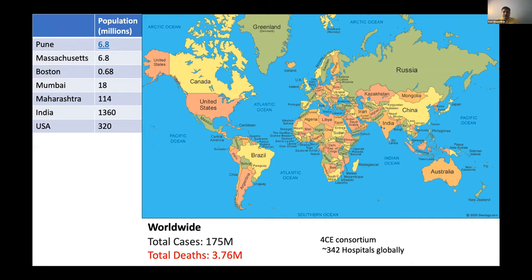The 4CE effort has a lot of hospitals — now 342 or more — characterizing what's happening with COVID using EHR data. If you look at PubMed and query for COVID publications, you see a concentration in the United States and Europe, which may not be applicable to the rest of the world because the demographics, genotypes, and virus variants are different. Given the lack of local knowledge production, you have to depend on information that may not apply.